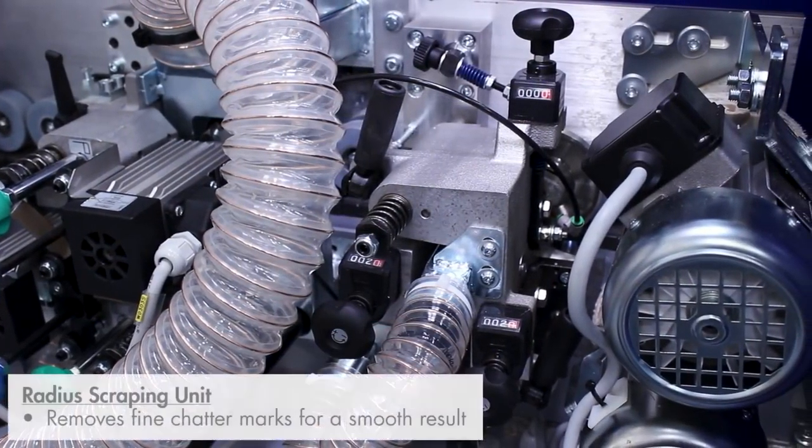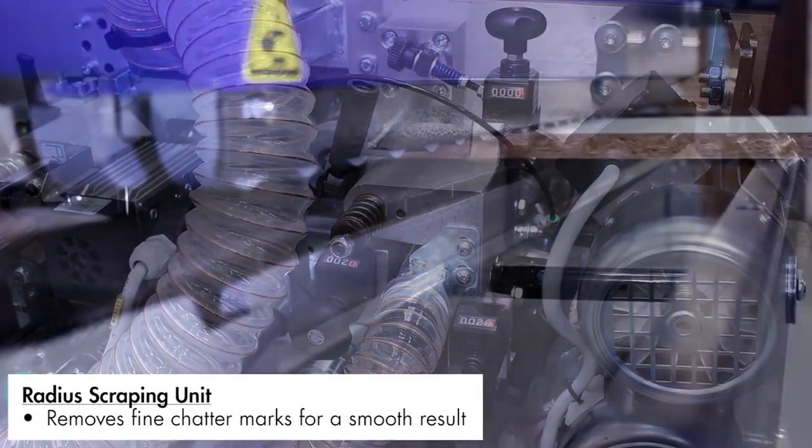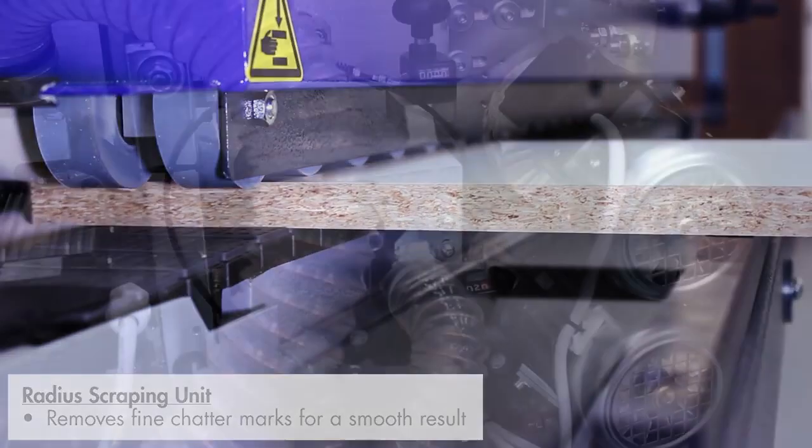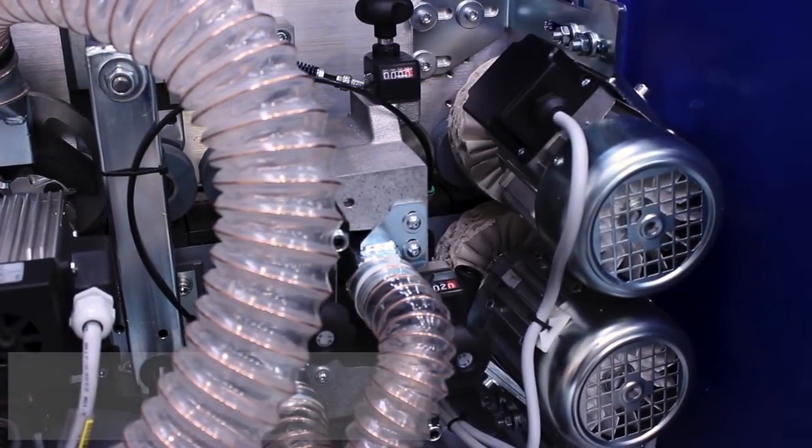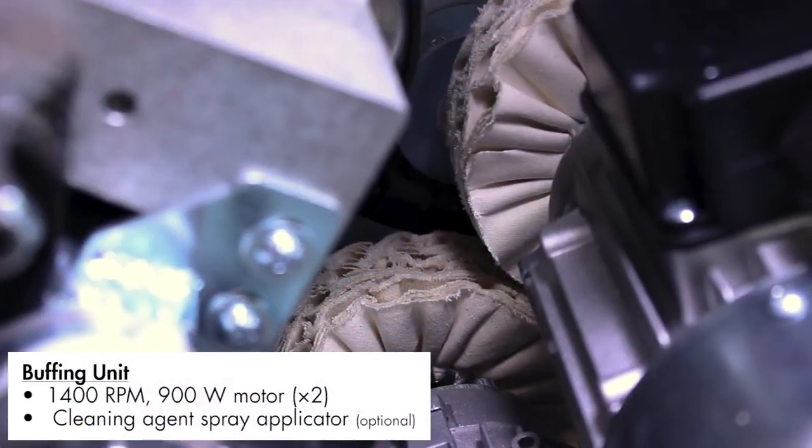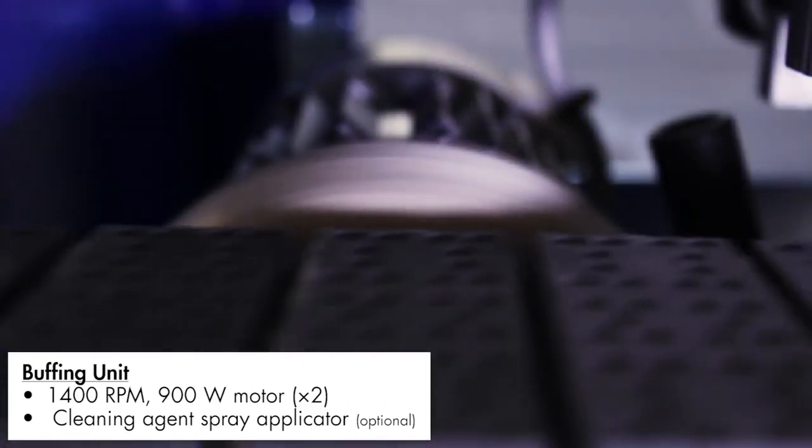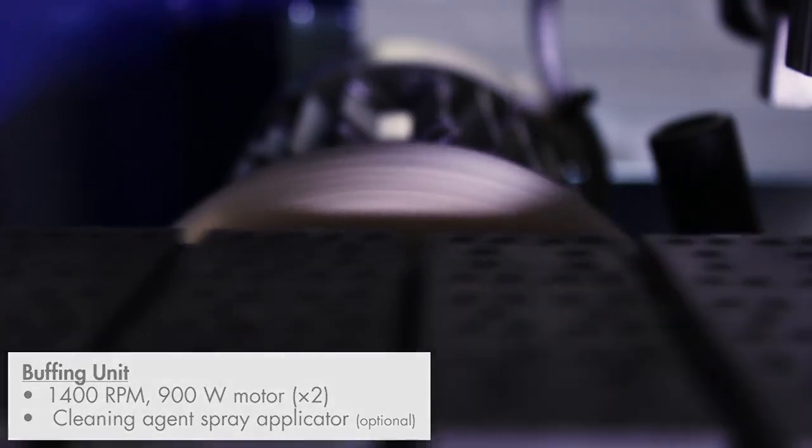The radius scraping unit fine-tunes the edge radius by removing fine chatter marks for a smooth result. The final stage is the buffing unit, which, with the optional installation of the cleaning agent spray applicator to the polishing heads, provides an excellent finish for ABS and PVC material.